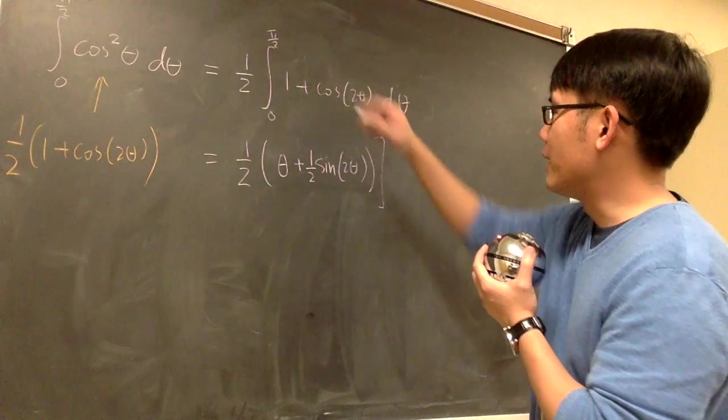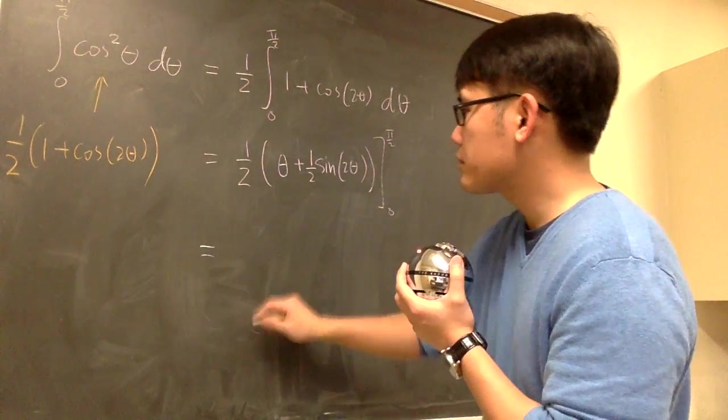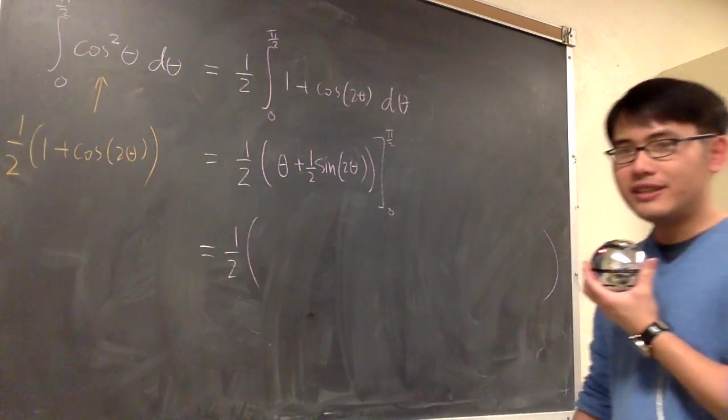Anyways, all we need to do is plug in numbers. 0 and pi over 2. And we'll be done. Here, I have 1 half. And I'm going to do a long substitution right here.